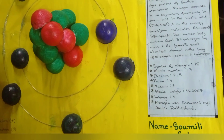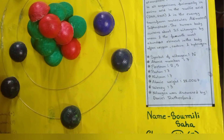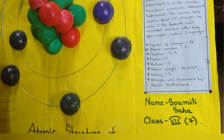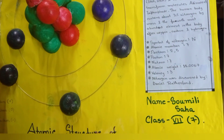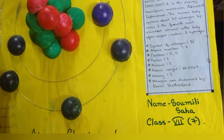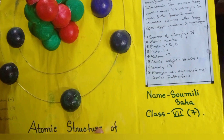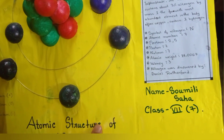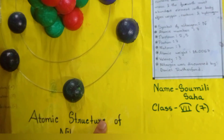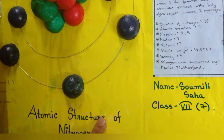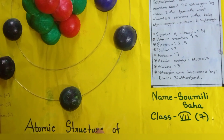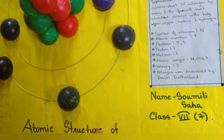Nitrogen is found in the nucleic acids DNA and RNA, and in the energy transfer molecule adenosine triphosphate. The human body contains about 3% nitrogen by mass, making it the fourth most abundant element in the body after oxygen, carbon, and hydrogen.